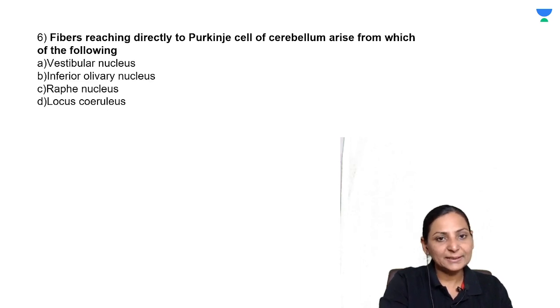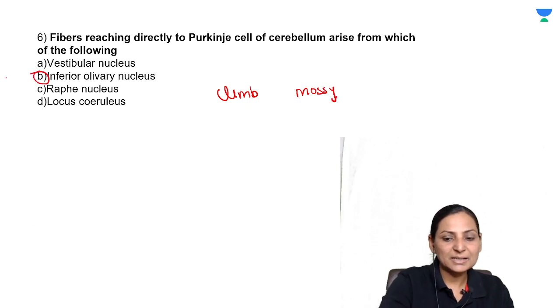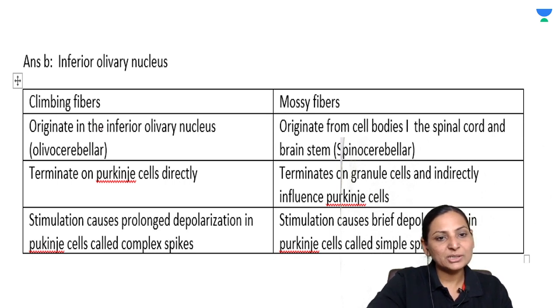The fibers reaching directly to the Purkinje cells of the cerebellum arise from which of the following: vestibular nucleus, inferior olivary nucleus, raphe nucleus, or locus coeruleus? You know that the inputs to the cerebellum are of two types - you call them climbing fibers and mossy fibers. The correct answer is inferior olivary nucleus. The fibers that originate in the inferior olivary nucleus are called climbing fibers which have one-to-one association with the Purkinje cells and they cause a prolonged depolarization that is called the complex spike.